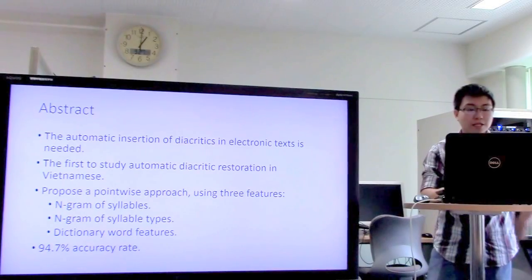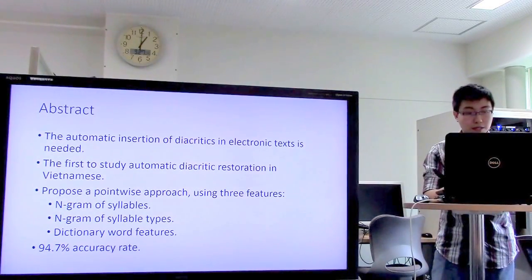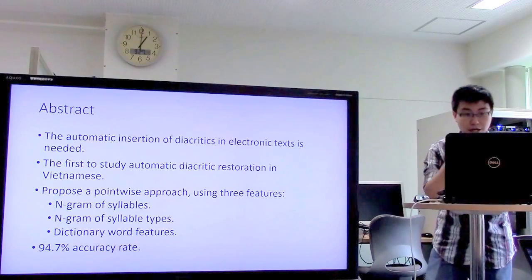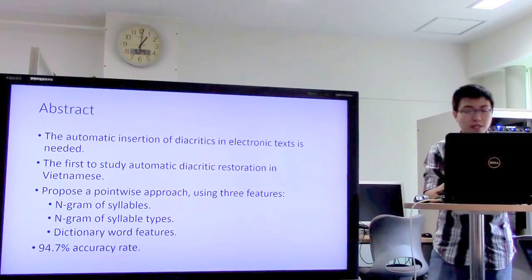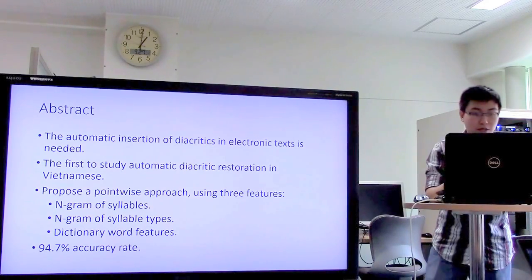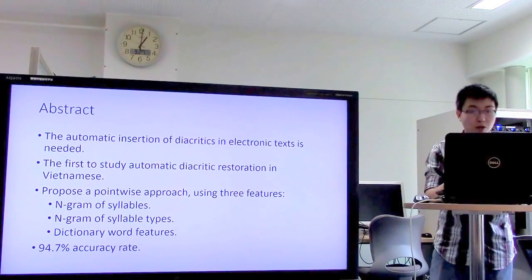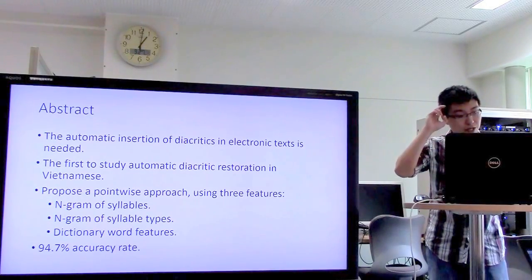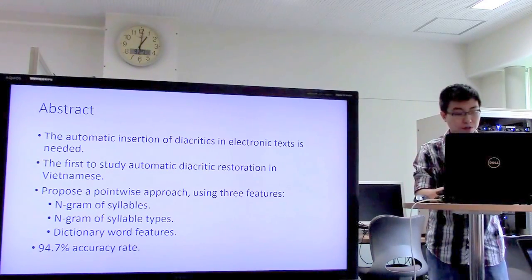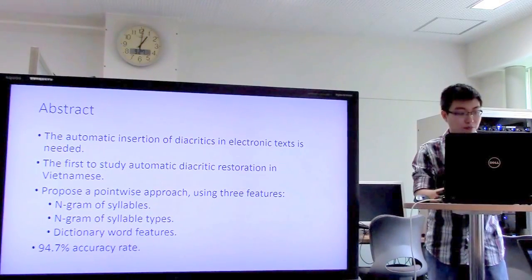The automatic insertion of diacritics in electronic text is needed. This paper is the first to attempt automatic diacritic restoration in Vietnamese, proposing a voice-wise approach using three features: n-gram for syllables, n-gram for syllable type, and dictionary word features. The result is 94.7% accuracy.